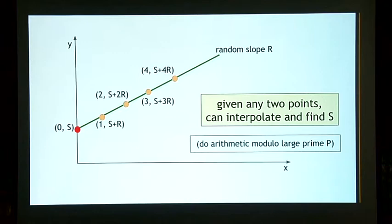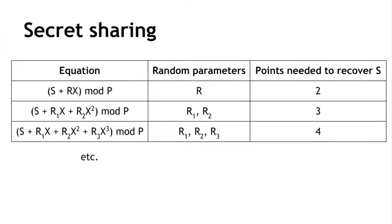But now what if we wanted to require more than two points? Well, for two points, we drew a line because any two points are sufficient to uniquely specify a line. If we want to require three points, what we're going to do is use a quadratic function, because any three points are sufficient to reconstruct a quadratic function. And so we can use this table to understand what's going on. If we use the equation s plus rx mod p with a random parameter r, that's the slope that we saw in the previous slide, then you need two points to recover s, because you need two points to interpolate a line.